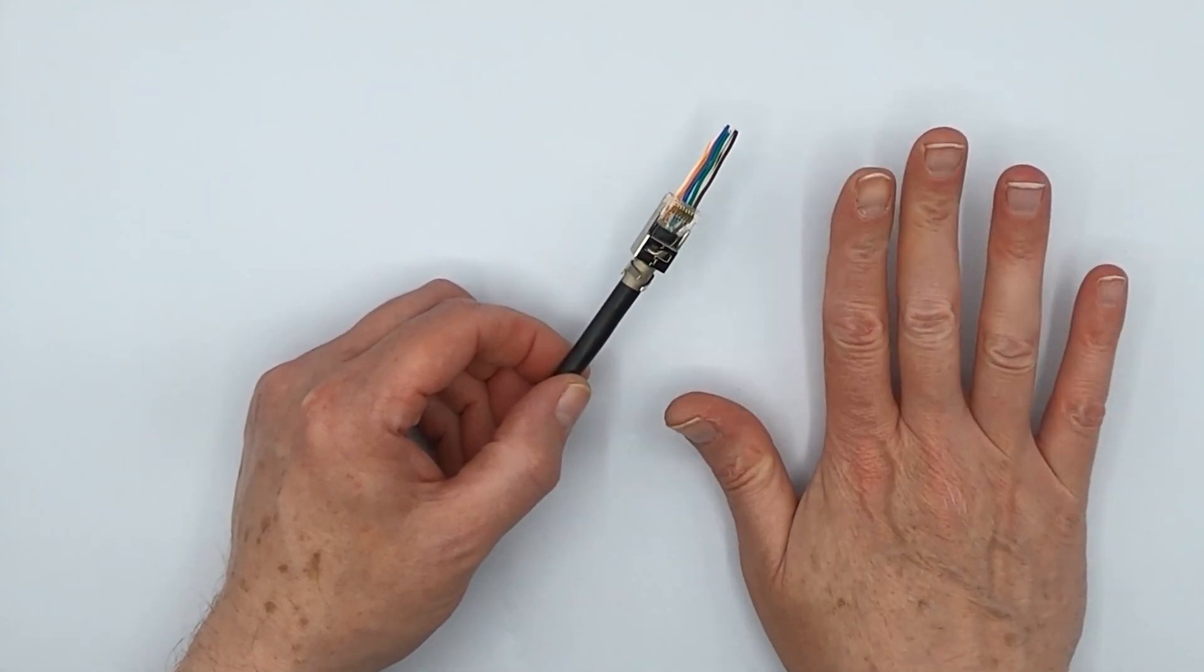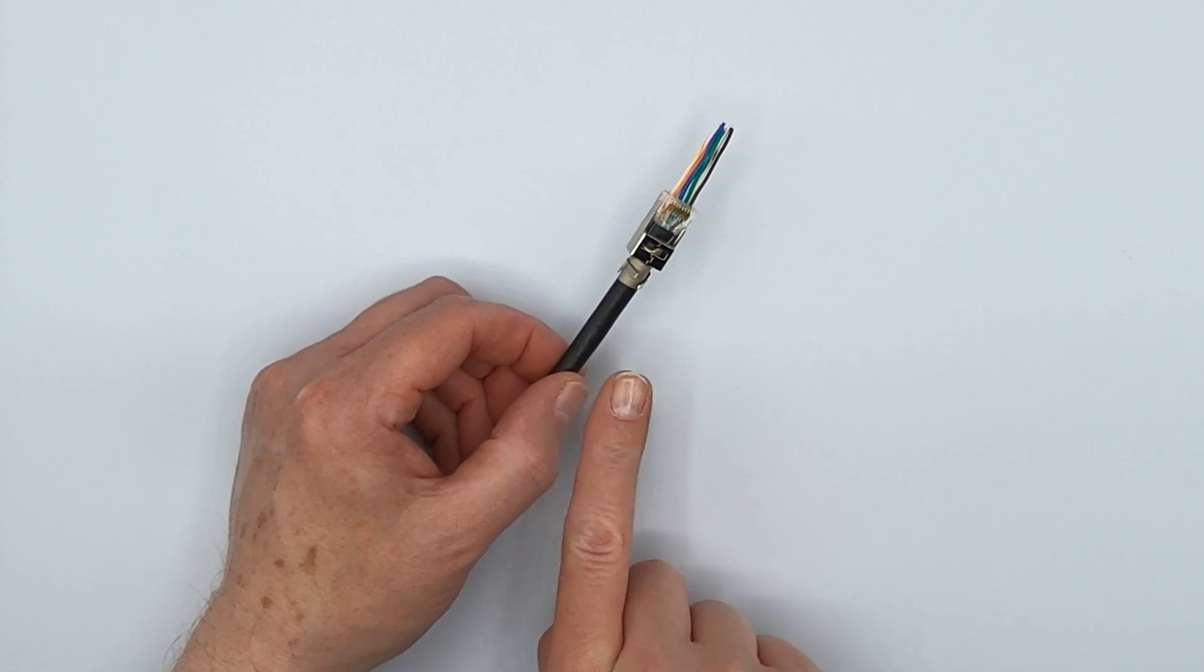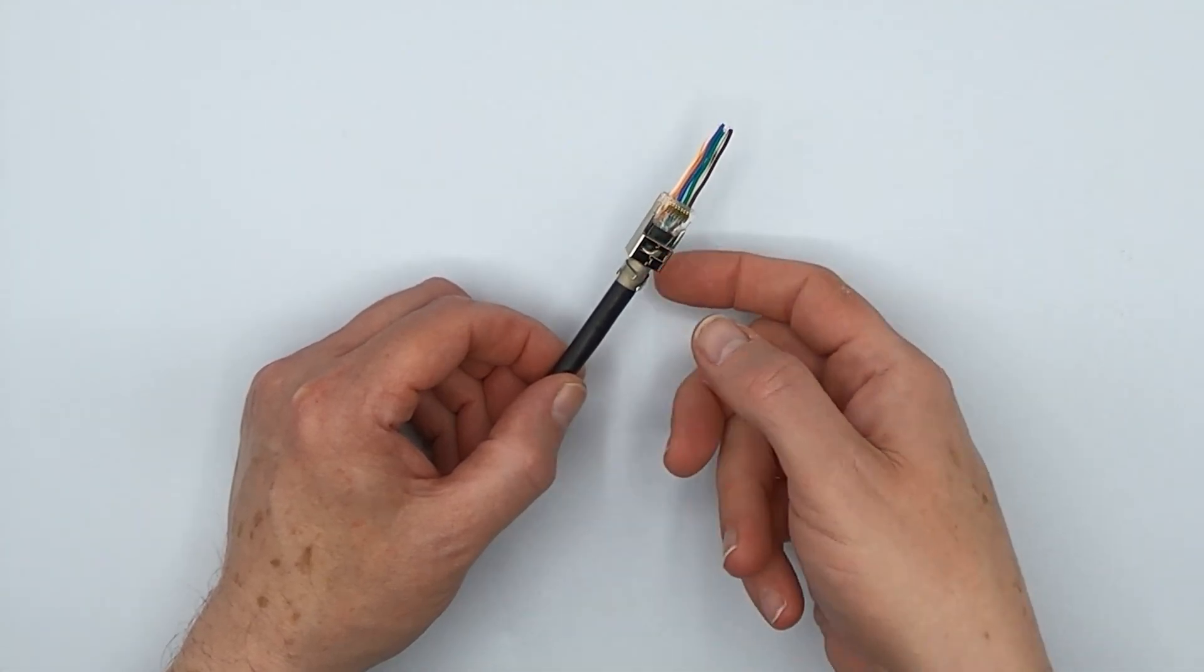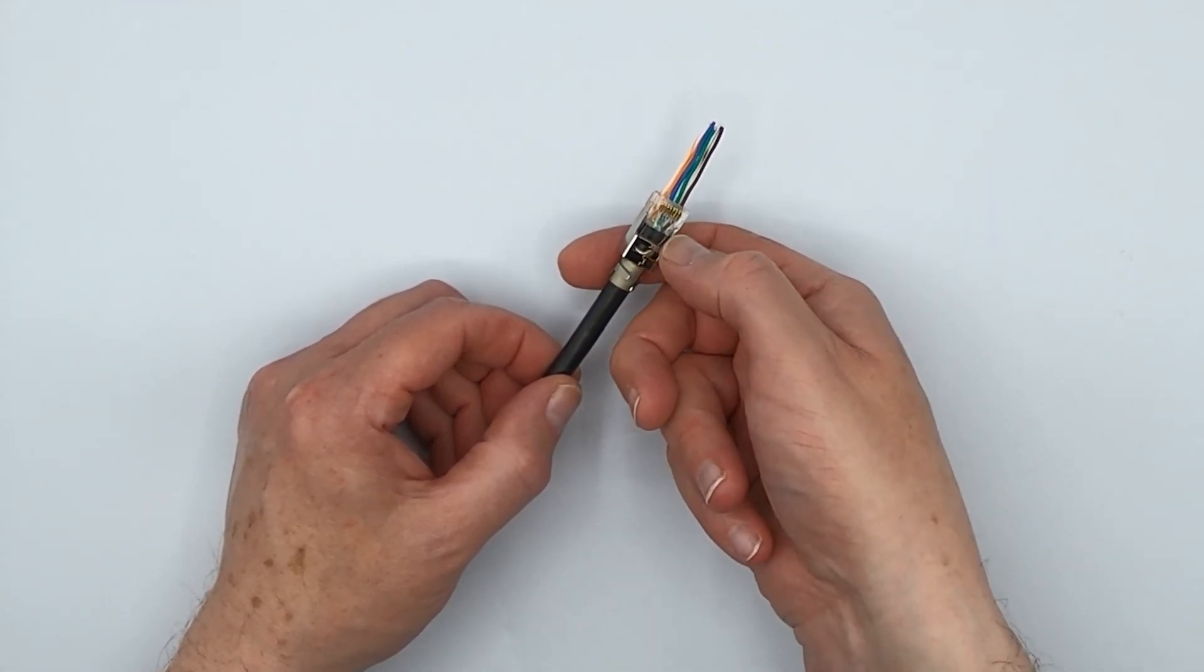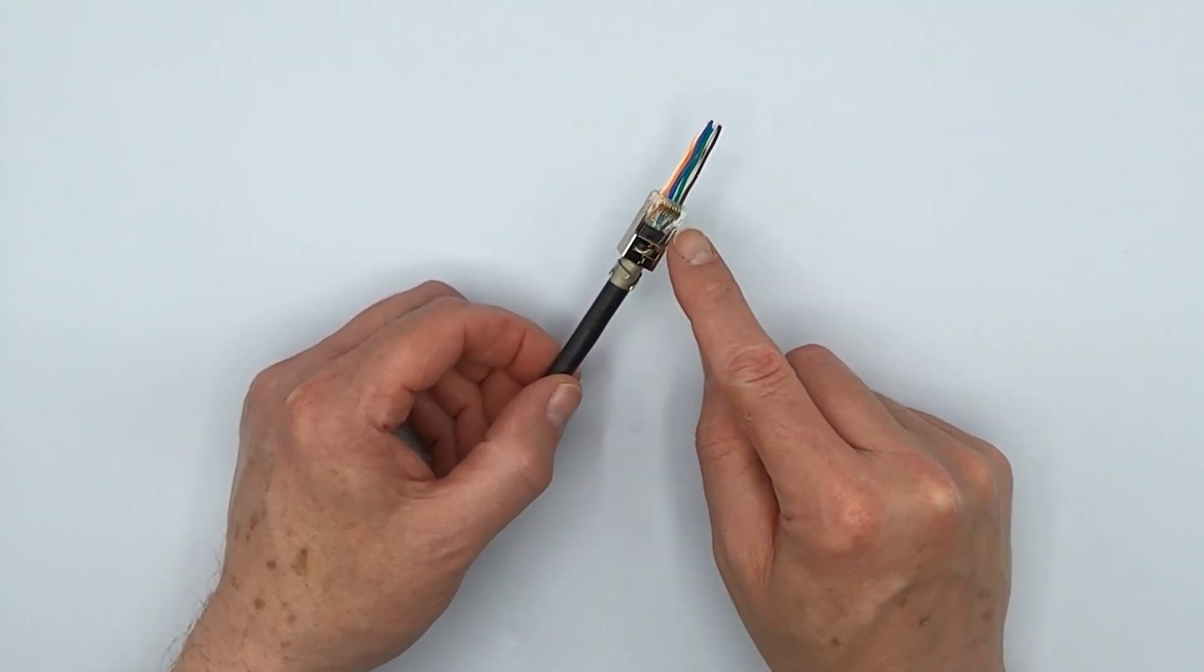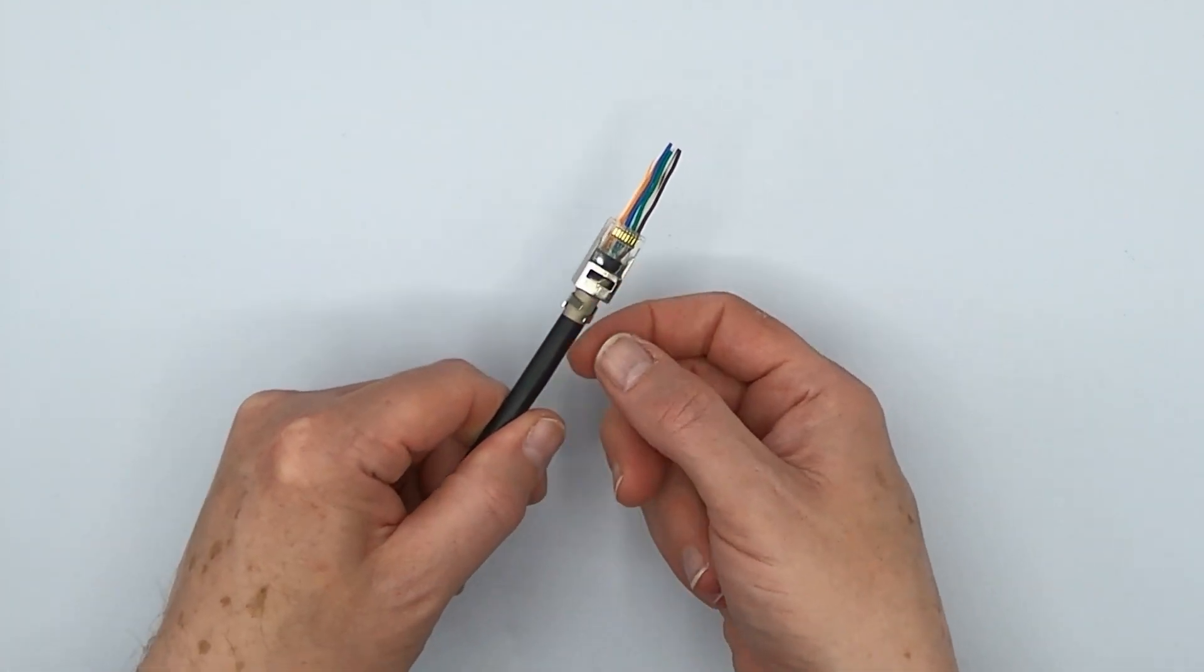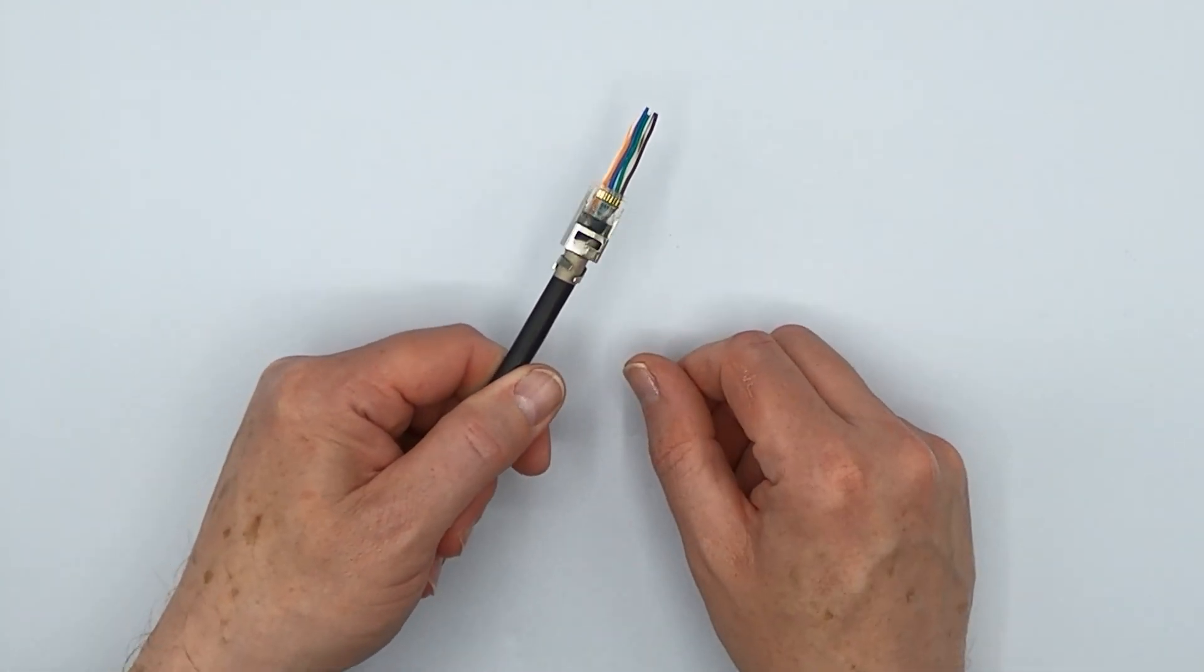So the general rule is when dealing with keystones and field termination plugs, put the strip all the way at the edge of the jacket. And if it's an RJ45 plug, skip about a little more than a quarter inch, maybe three-eighths of an inch backwards. And that's how that would look. And no fuss, no muss, and no annoying cable shield to deal with.